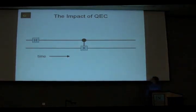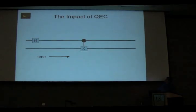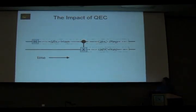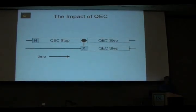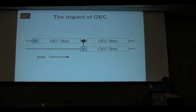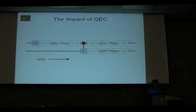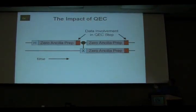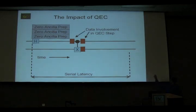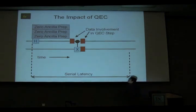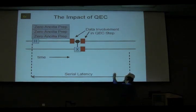Here's a very simple quantum circuit. It's a logical quantum circuit, so at the very least we expect that we'll have to perform a QEC step after each logical gate. If we're using a Steane-style quantum error correction like the CSS codes, each of those QEC steps breaks down into a rather lengthy and complex encoded zero ancilla prepare, followed by a much shorter involvement with the data itself. So if we just run the circuit like that, we have some latency.